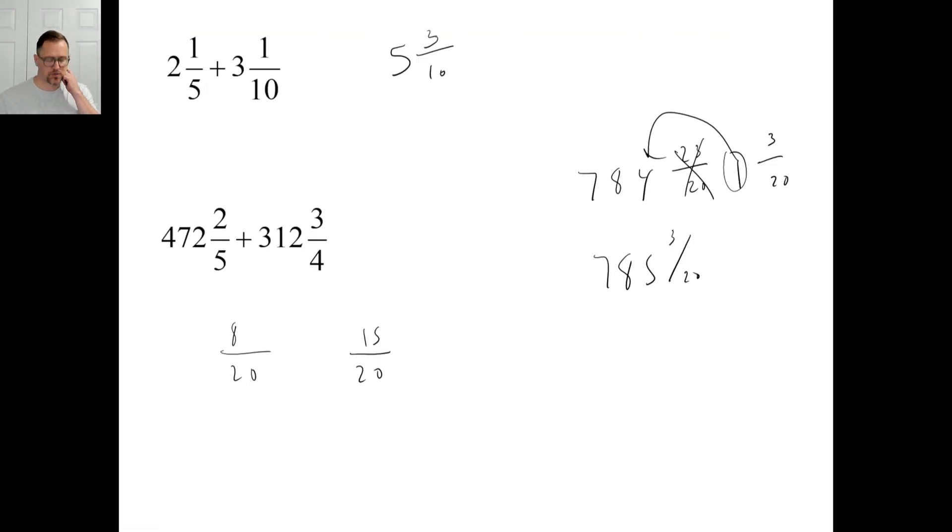For C, Roger could travel 48 yards in 6 seconds. What was his rate in yards per second and what was his rate in seconds per yard? If he goes 48 yards in 6 seconds, he goes 8 yards per second. That's his rate. And his rate in seconds per yard, that's only 1/8 of a second it takes him to go 1 yard. So, pause it and try D.